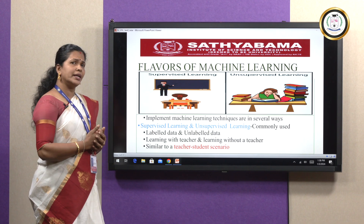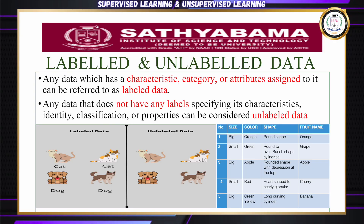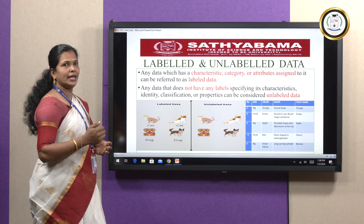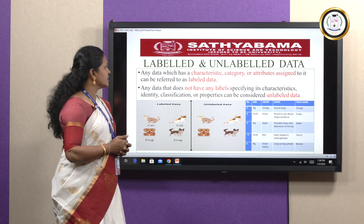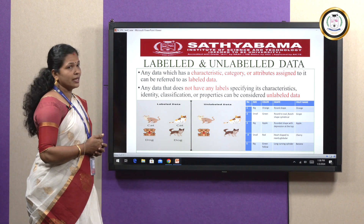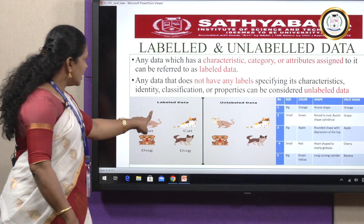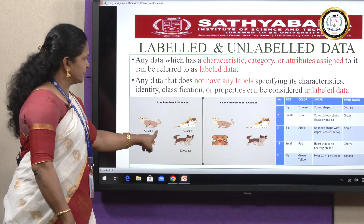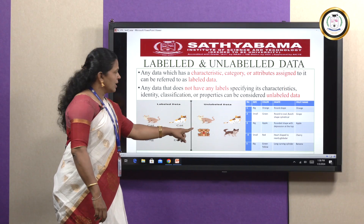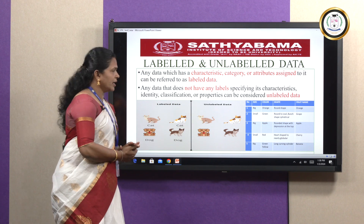What is labeled and unlabeled data? Any data which has a characteristic, category, or attributes assigned to it can be referred to as labeled data. Any data that does not have any labels specifying its characteristic, identity, classification, or properties can be considered unlabeled data. In labeled data, we specify names for animals; in unlabeled data, we do not specify any names.